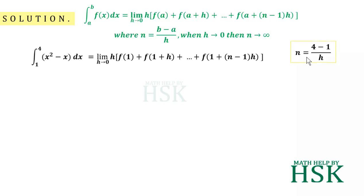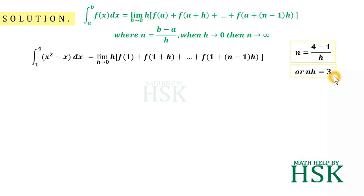Further, n is equal to (b minus a) upon h. So n is equal to (4 minus 1) upon h, meaning nh is equal to 3.